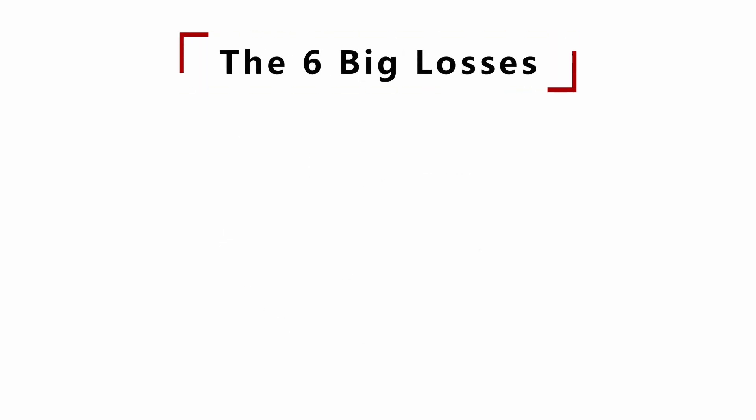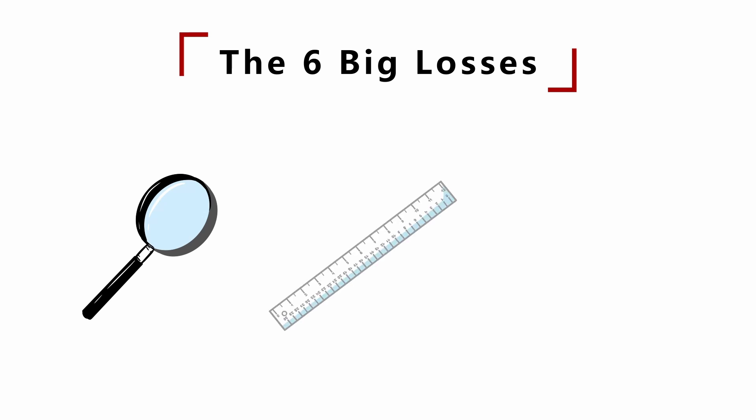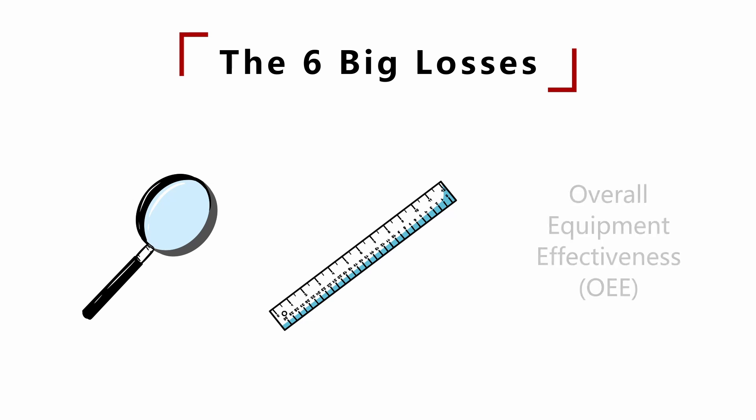Now that you know the six big losses, you must learn to observe them, recognize them, and measure them correctly. When you have the measurements, you can calculate Overall Equipment Effectiveness (OEE). For the definition of OEE and how to calculate it, there is a series of in-depth videos in the description.